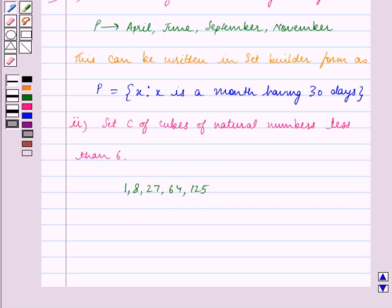But we do not need to put the individual elements in set notation. So in set builder form, the set can be represented as set C which is equal to x such that x is equal to n cube, where n belongs to set of natural numbers and n is less than 6.